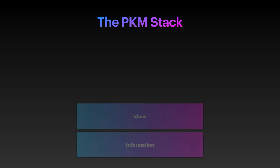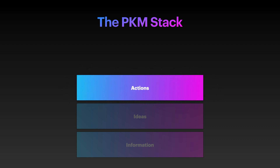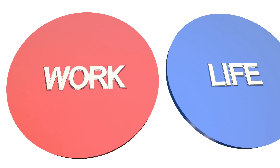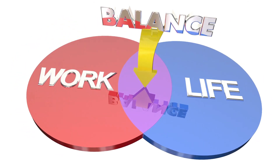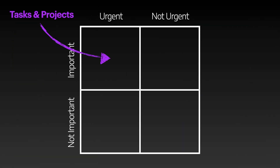The third level of the PKM stack is actions — this is where you take action on those ideas and they become real. There are a few types of actions: one-off tasks, multi-step projects, habits, and bundles of habits called routines. Tasks and projects are usually things that are important and time-based, while habits and routines tend to be things like journaling or going to the gym. They're important, but they're not really urgent — if you miss one, you're not going to see any real difference.